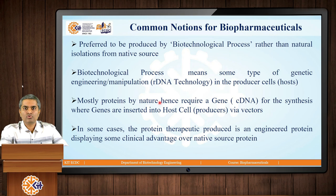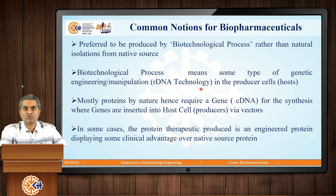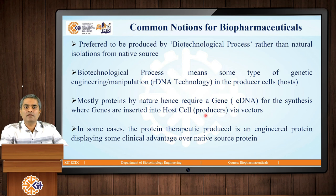There are a few common notions when we talk about biopharmaceutical production. They are preferred to be produced by a biotechnological process rather than isolating them from their native source. As discussed in the previous class, some type of genetic engineering or genetic manipulation called recombinant DNA technology is involved. Because biopharmaceuticals are mostly protein in nature, they require a gene of interest or complementary DNA for their synthesis. These genes are inserted into host producer cells via vectors, and the cells are cultivated to produce or express the protein of interest.